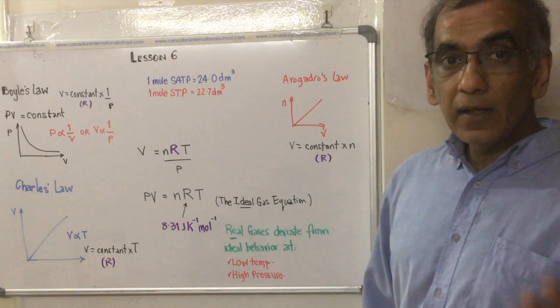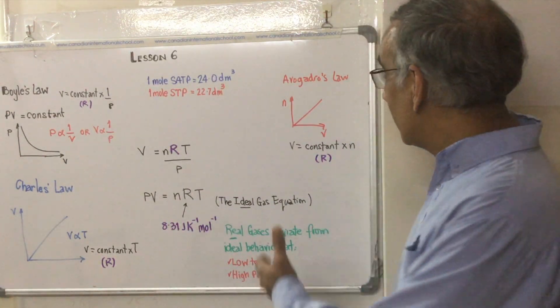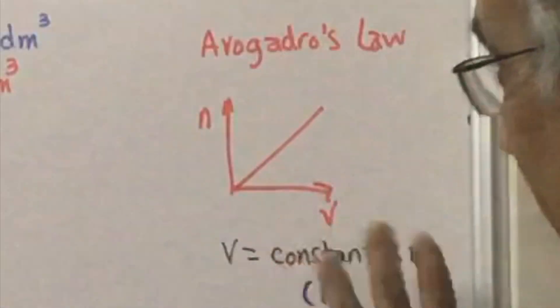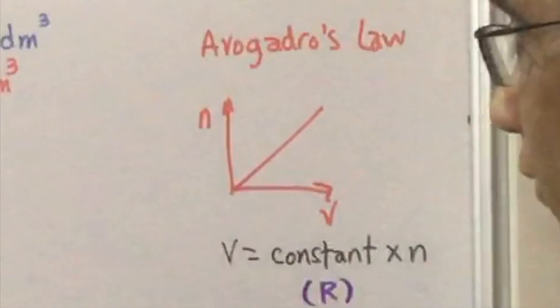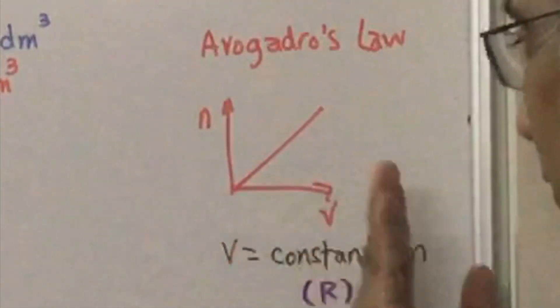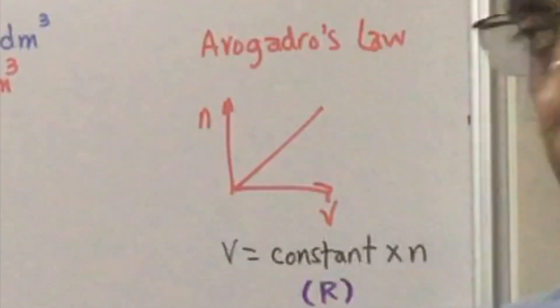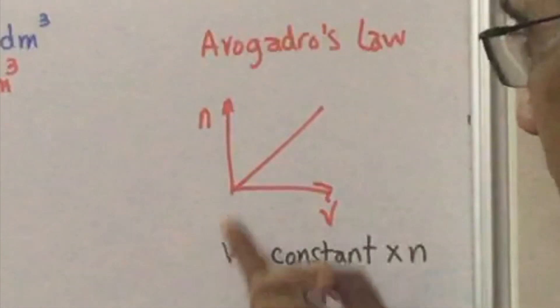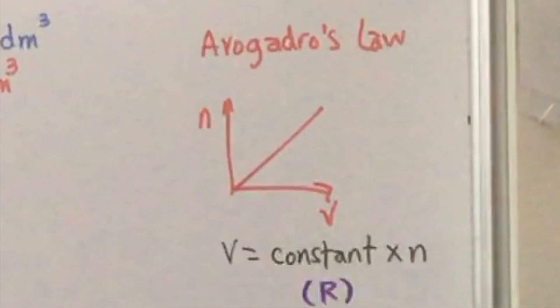Then we've got a third relationship, Avogadro's law. And in Avogadro's law, we know that the number of moles, if that goes up, the volume of the gas goes up. So there's a direct relationship between volume and the number of moles.